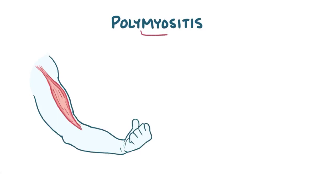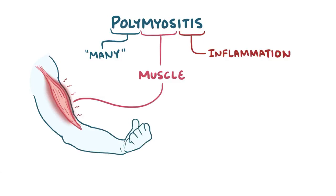In polymyositis, myos refers to the muscles, poly means many, and itis refers to inflammation. So polymyositis is an inflammatory disorder which involves many muscle groups around the body.